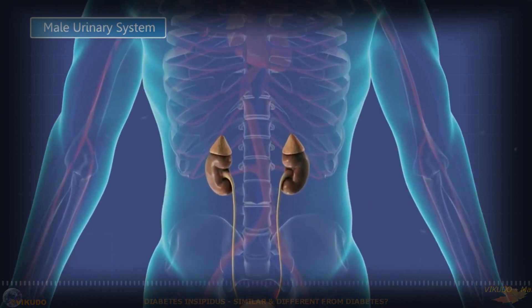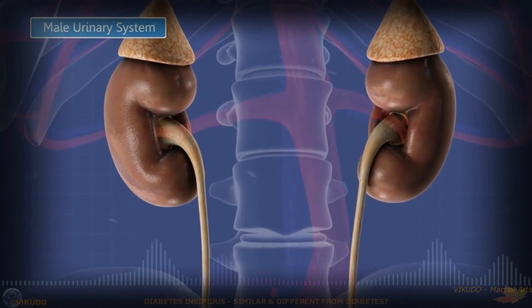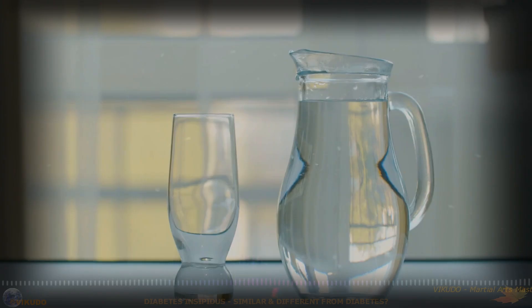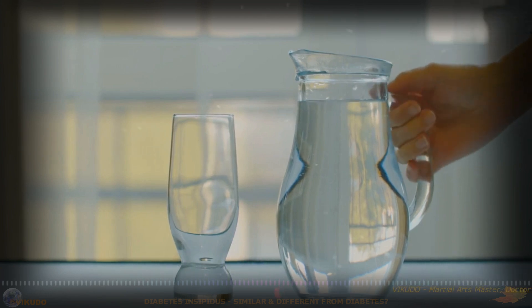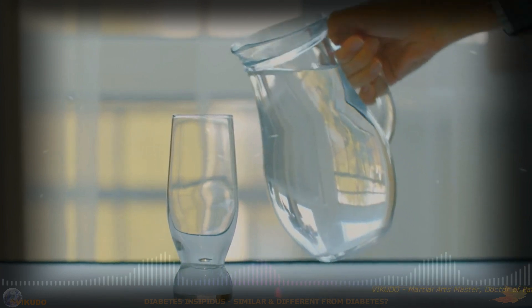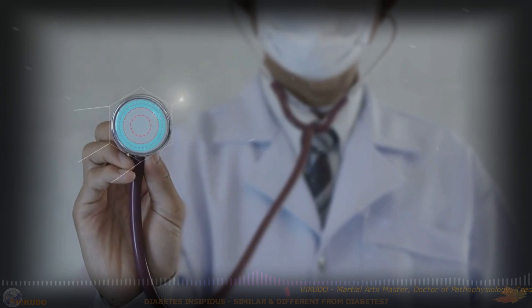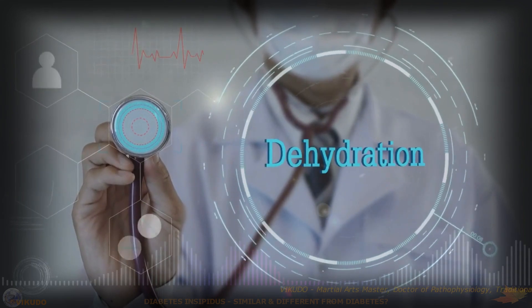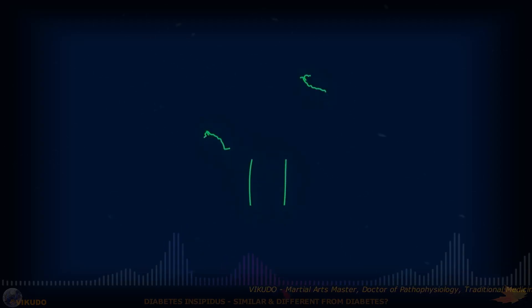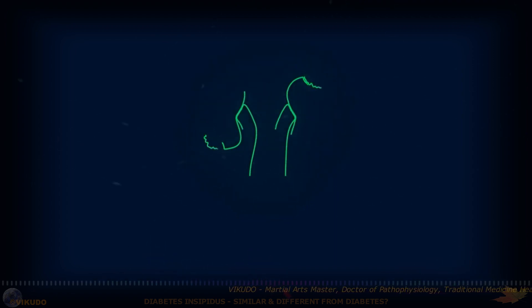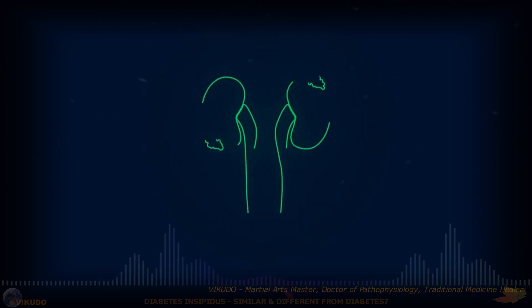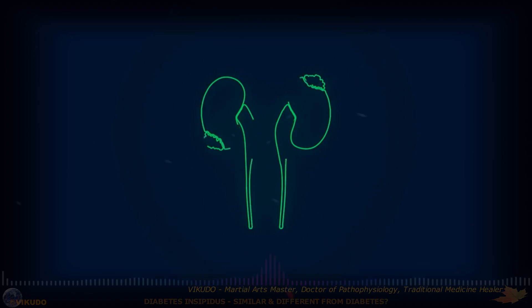Hydration: Diabetes insipidus patients need to drink enough water to compensate for excessive urine output and prevent dehydration. Monitoring fluid intake is important to maintain proper hydration levels. In nephrogenic diabetes insipidus, stopping medications that make the disease worse, such as lithium, and controlling underlying kidney disorders can help relieve symptoms.